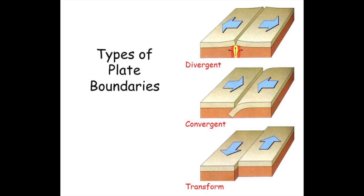A transform boundary is where the two plates slide up against each other. A convergent boundary is where the two plates are coming together. And a divergent boundary is where the two plates are spreading apart.